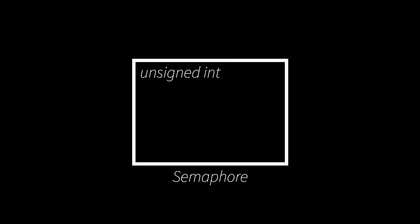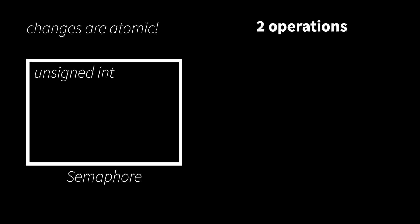So what is a semaphore? A semaphore is basically an unsigned integer with some quirks. One of those quirks is that changes to the integer value are atomic, meaning that if one thread or process increments the integer and another wants to decrement it, those increment and decrement operations cannot interrupt each other. Another quirk is how we interact with semaphores — we can only use two operations: wait and post. Post is sometimes called signal. We don't access a semaphore's value directly; if you want to do anything with it, you either call wait or post.